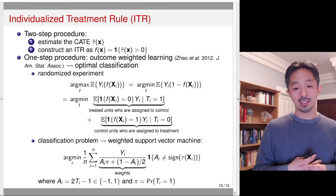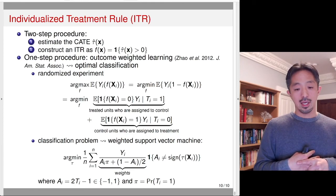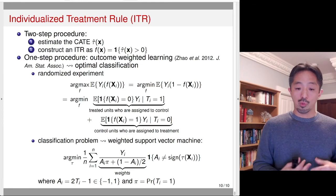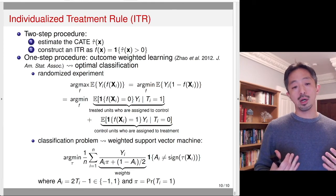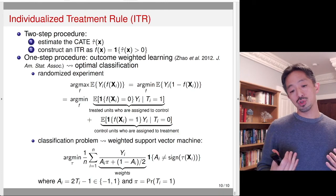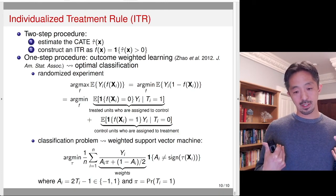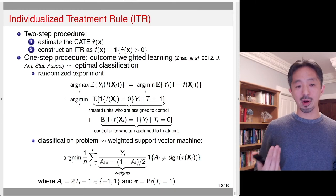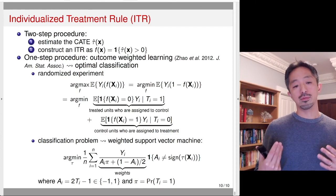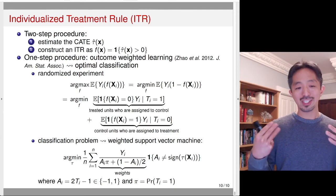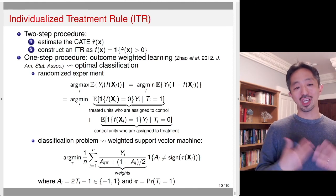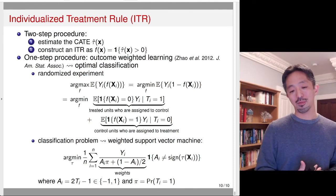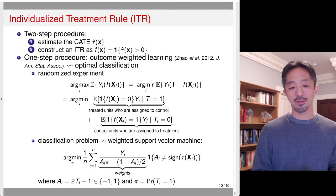So this is a one-step procedure where you estimate the CATE in a way that directly yields the optimal ITR. We'll stop here.